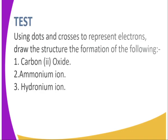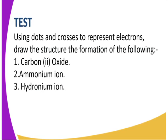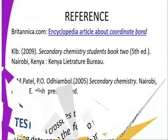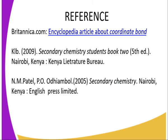Now let's look at a test to see whether we can apply the same concept. Using dots and crosses to represent electrons, draw the structure to show the formation of the following: carbon dioxide, ammonium ion, and hydronium ion. You can also refer to the same concept in the following examples, and this will help you in better understanding the dative bond. Thank you for viewing.